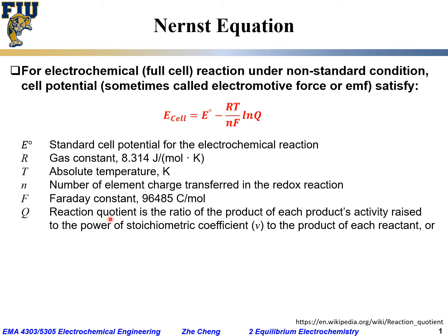Q is the so-called reaction quotient. It is a ratio where the numerator is the product of each reaction product's activity raised to the power of its stoichiometric coefficient, divided by the product of each reactant's activity raised to the power of its stoichiometric coefficient.